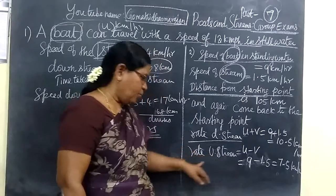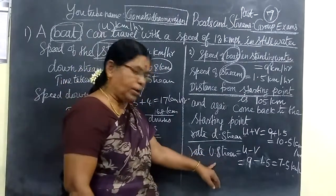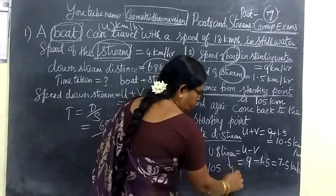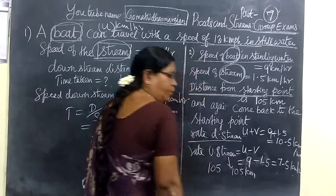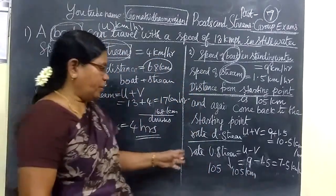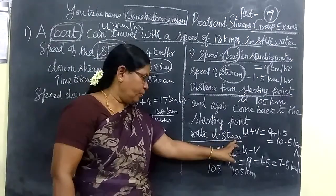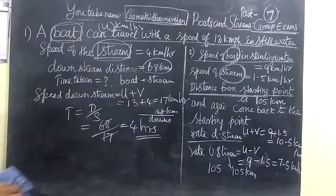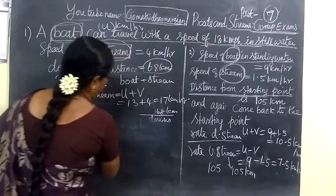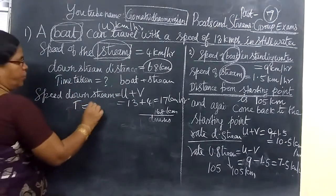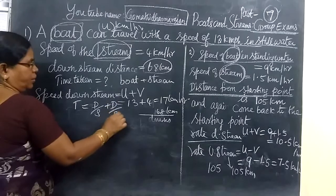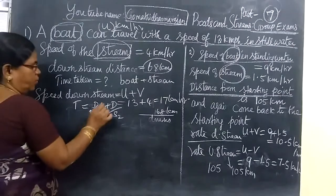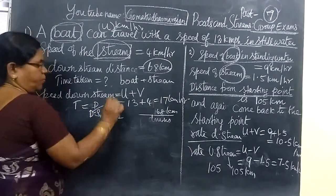We have to find the total time taken for downstream and upstream. Here, we know the formula: time equals distance by speed. Again, distance by speed. The distance is the same. Here speed will be downstream speed, then upstream speed.